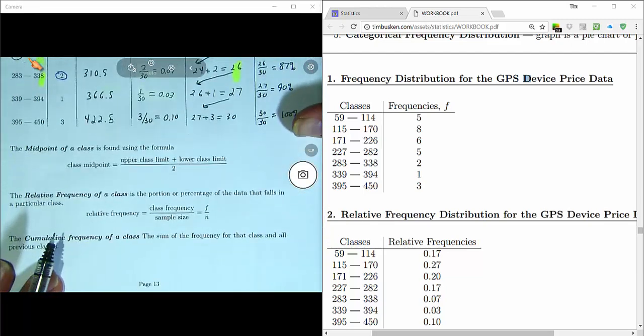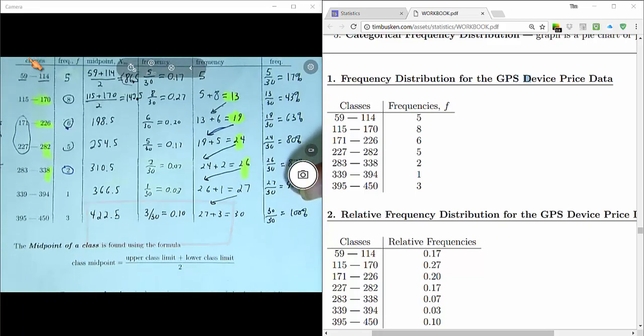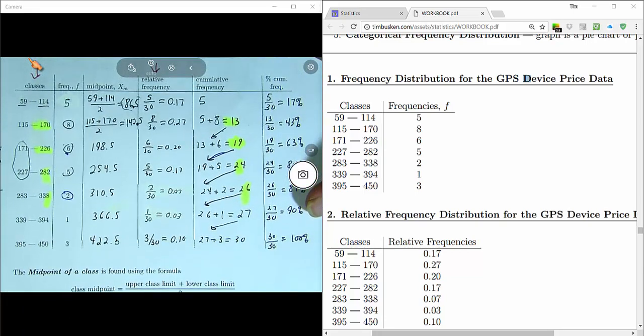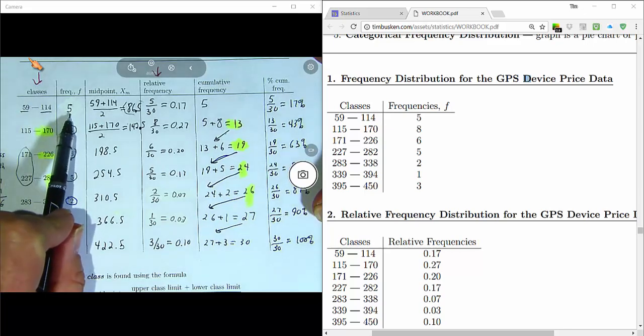So the formula for that is class frequency divided by sample size. This gives you the percent as a decimal. You can see that, for example, in the first class we had a frequency of 5. There were 30 total measurements in the sample.